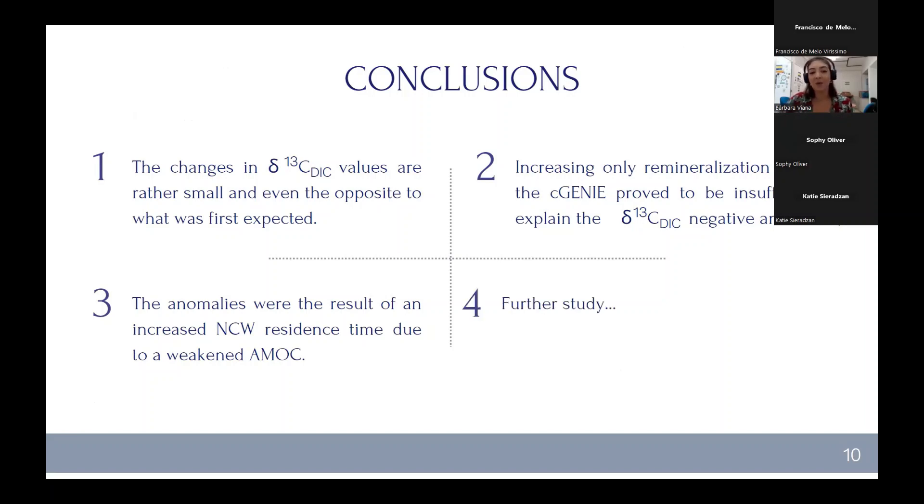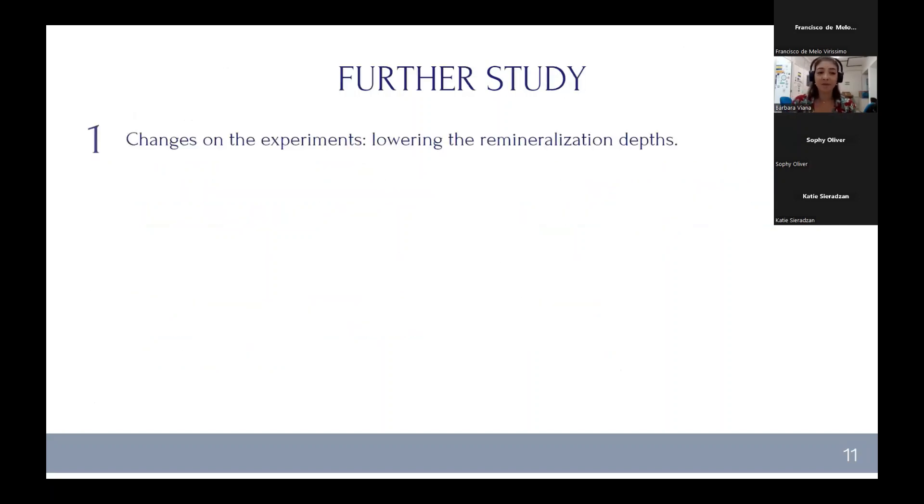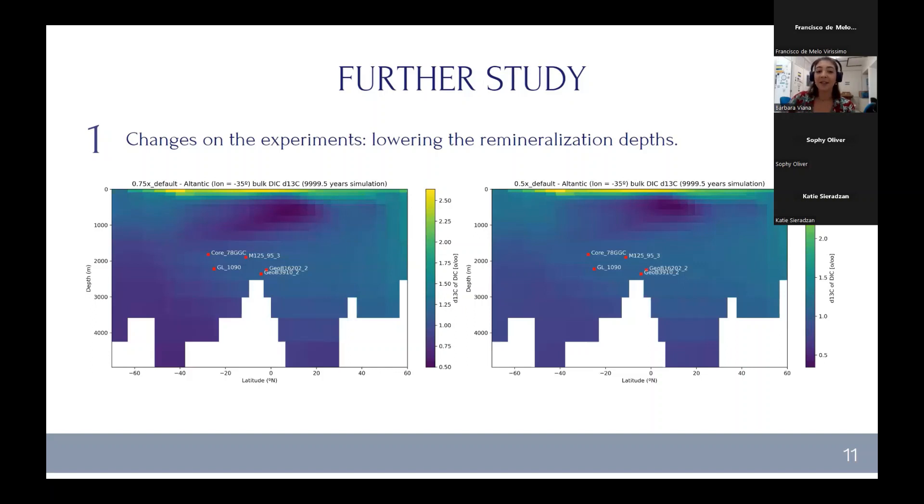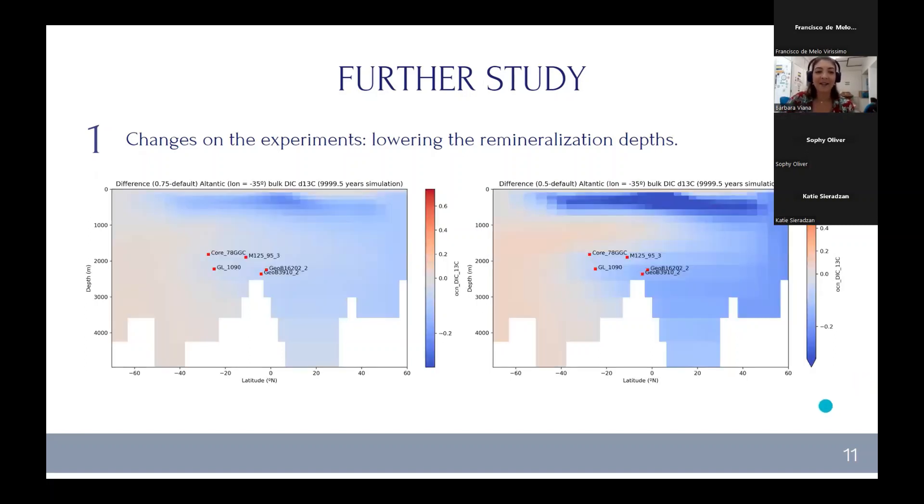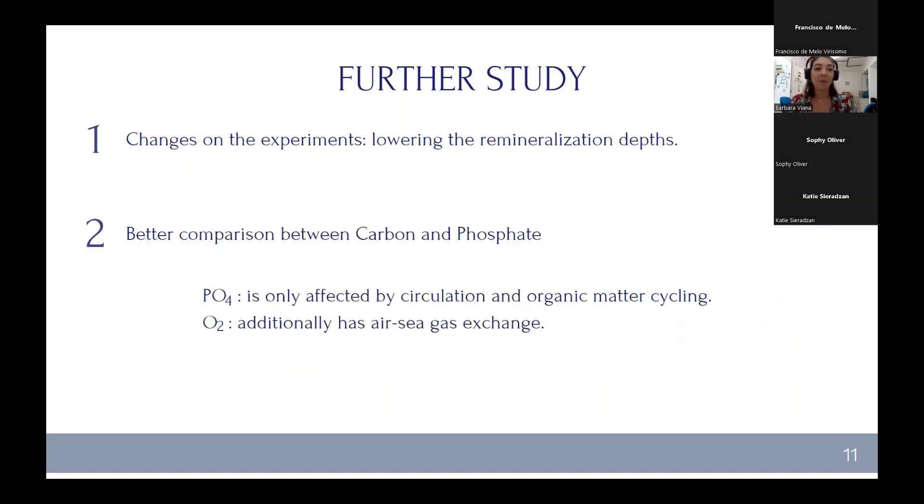But we also want to go further with this study. And so far, we changed a little bit of the experiments. And now we are lowering the remineralization depth. Here are some previous results where we've run one of the experiments with 0.75 the default remineralization depth and half of the default. And we can see that carbon, the isotopic signature, it is also lowering, not as much as we expected, but it is better result than we had before. Here again, the difference between the default and the 0.75 depth and half of the default depth.